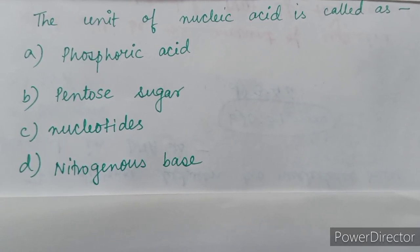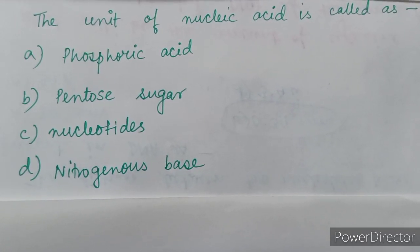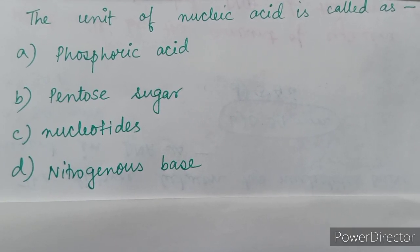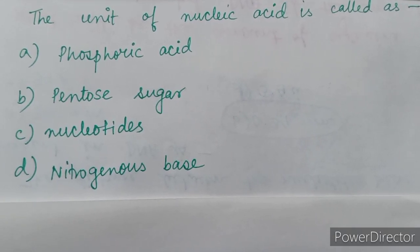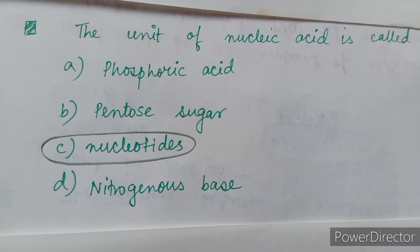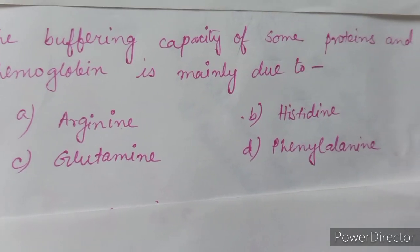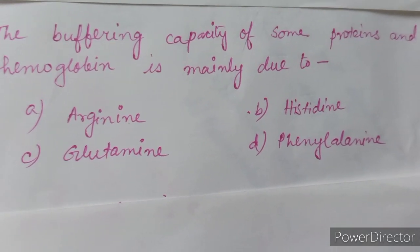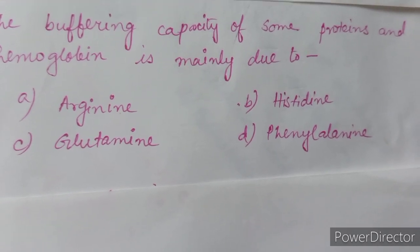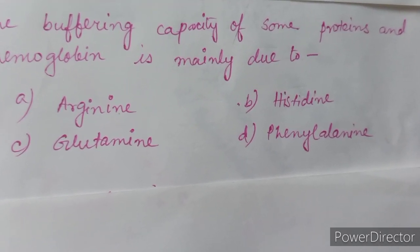Next question: the unit of nucleic acid is called — option A: phosphoric acid, option B: pentose sugar, option C: nucleotides, option D: nitrogenous base. The correct answer is option C: nucleotides.